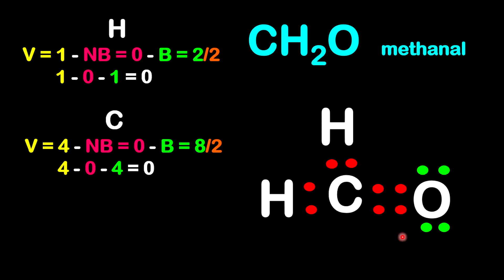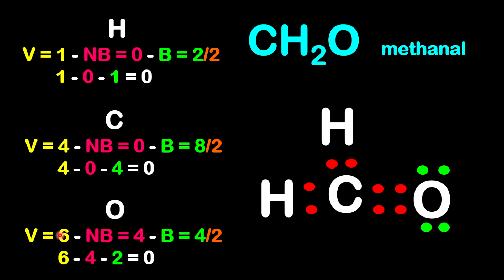Let's check for oxygen. Oxygen is in group 6, so there are 6 valence electrons. We have 4 non-bonding electrons — those are in green. And then we have 4 bonding electrons as well, so 4 divided by 2. So it's going to be 6 minus 4 minus 2, which gives 0. This appears to be a very stable and satisfied structure.